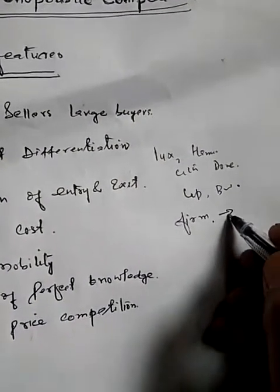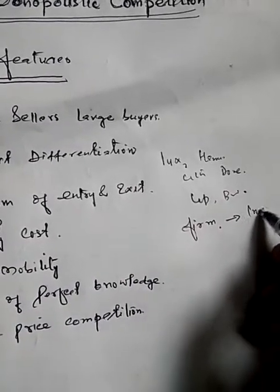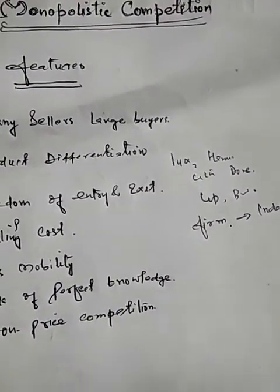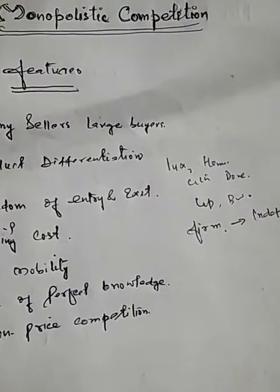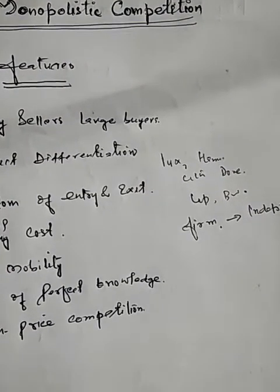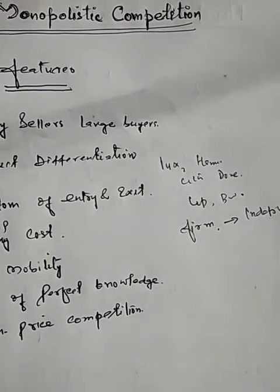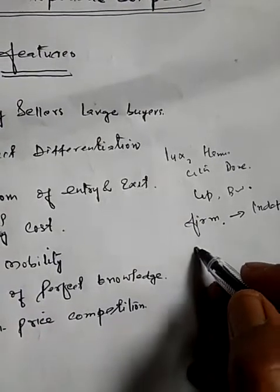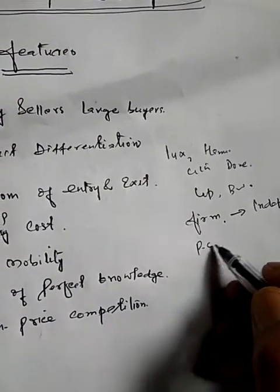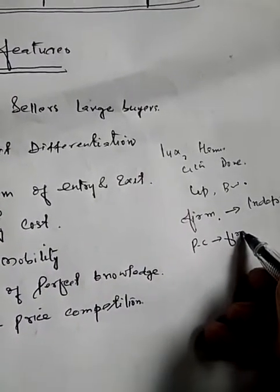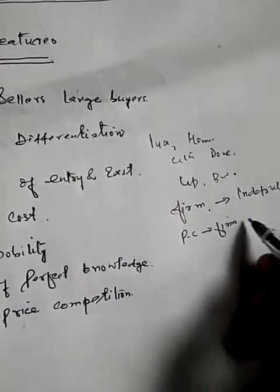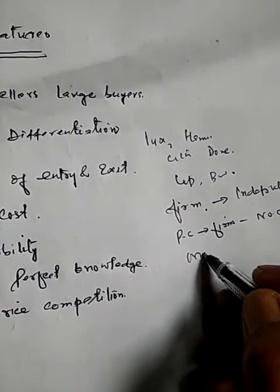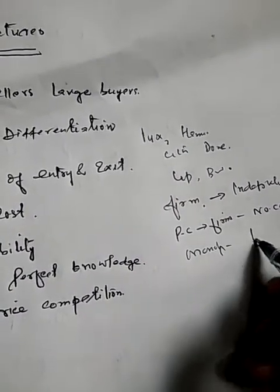Each firm pursues its own policy independently, so that each firm has partial control over the price of its product. In perfect competition, no firm has any control over the market price — no control at all. But in monopoly there is full control. Under monopolistic competition, each firm has partial control over its own product's price.